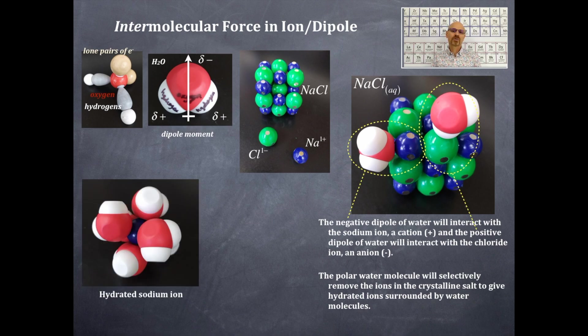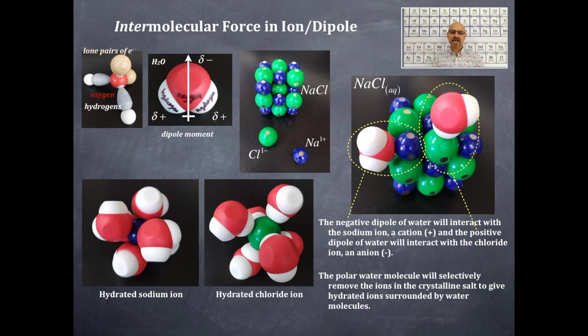This is a hydrated sodium ion. So the sodium ion is completely covered up with water molecules, and it is separated from the crystalline structure of sodium chloride. And here is a hydrated chloride ion, and this hydrated chloride ion is completely surrounded by water molecules, both of them three-dimensionally.